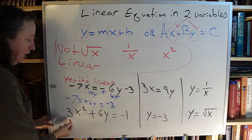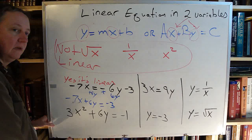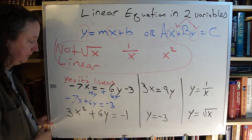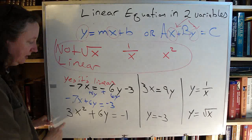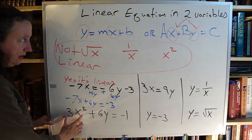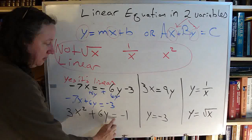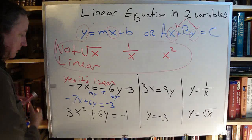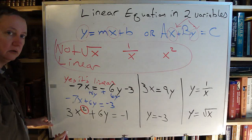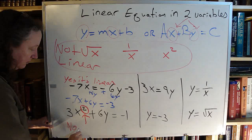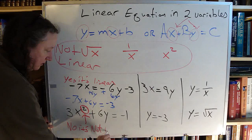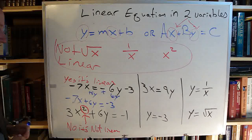Going to my bottom example down here. 3x squared plus 6y equals negative 1. So I told you three things to look out for that will tell you it's not linear. In first glance, I'm going to look at this. Does it look like y equals mx plus b? No. Does it look like Ax squared plus By equals c? Very close to it. Problem though, there is this exponent right here. That exponent is telling me that this equation is not linear. No, it is not linear.